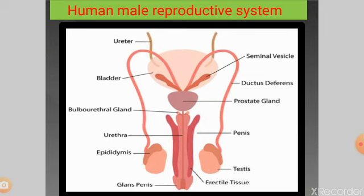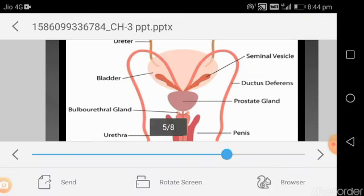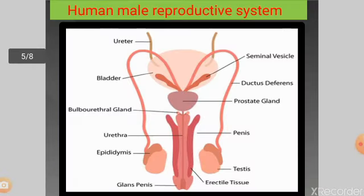Let us concentrate on the accessory glands first. There are three accessory glands: a pair of seminal vesicles, a single prostate gland, and a very small pair of bulbo-urethral glands.